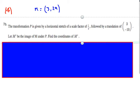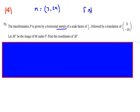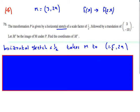First off, it's just worth noting — because they could ask it in a slightly different form — a horizontal stretch of a scale factor of a half is the same as f(x) going to f(2x). So this is what a horizontal stretch of scale factor half would look like in function notation. What this actually means is that the x-coordinates are halved. The y-coordinates stay the same, but we halve the x-coordinates. So instead of having (3, 29), we end up with (1.5, 29).